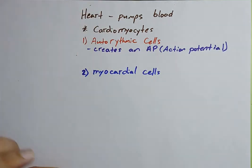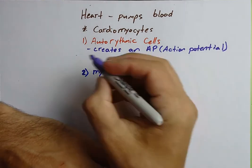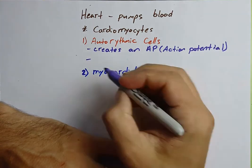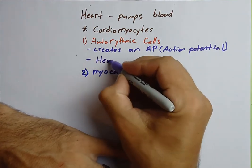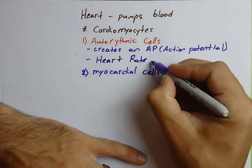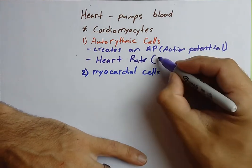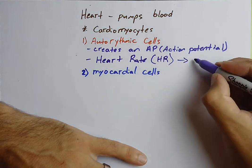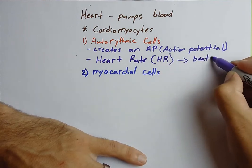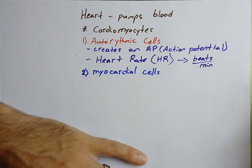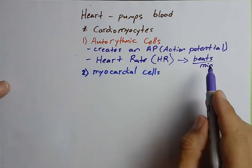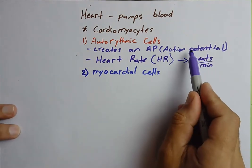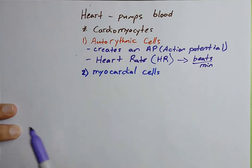It's these auto-rhythmic cells and their determination of the action potential that ends up determining how many times the heart beats in a period of time. This is called the heart rate, or HR, with units of beats per minute. How many times does the heart actually beat in a minute is determined by how many action potentials are created by the auto-rhythmic cells every minute.